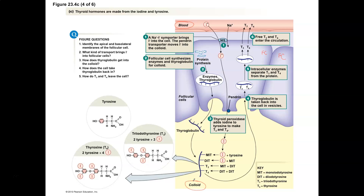Thyroid hormones essentially have long-term effects on metabolism. They're really essential for normal growth and development, especially in infants and children. Thyroid hormones are important to be produced and released into the bloodstream so that they can affect cells of the body and help us with our metabolism and overall growth and development. When you study thyroid hormones, you have to understand that thyroid hormones need iodine to be functional.